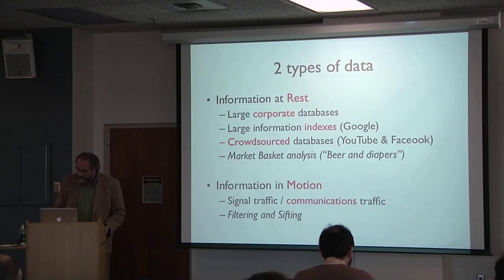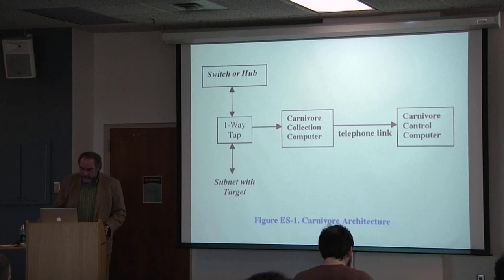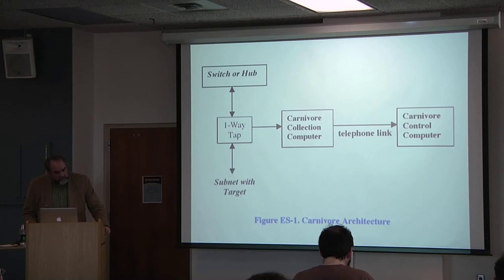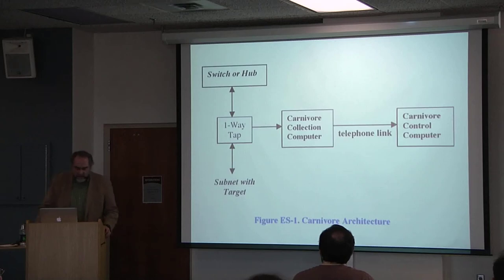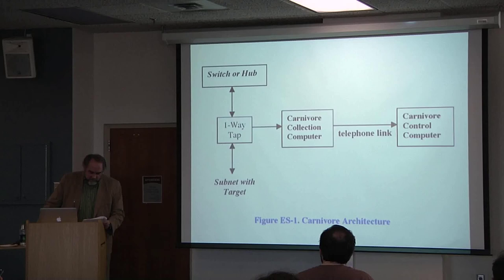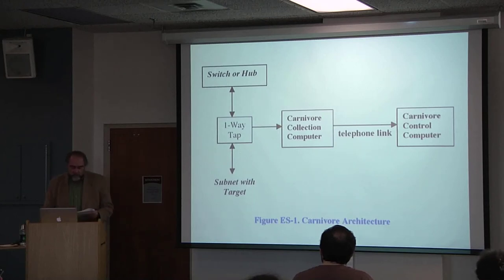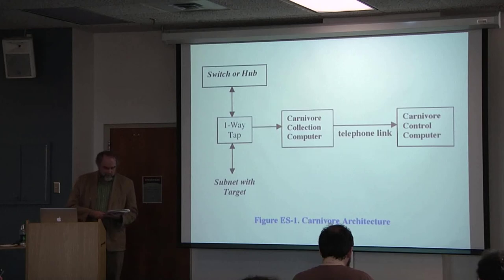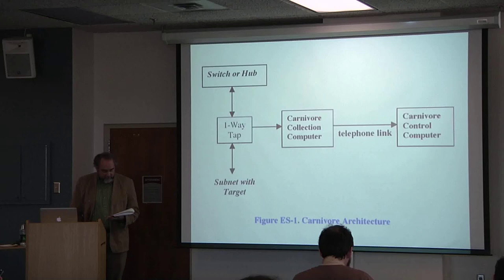Information in motion is the information that is in transit over communication channels, be they fiber optic cables, satellites, or your local Wi-Fi. This is the massive flow of phone conversations, emails, web page requests, and various internet transactions. The independent technical review of the Carnivore system, final report of 2000, prepared by the IITRI, has some nice graphics to show how this is done. Essentially, you tap into a network and listen in on the traffic, filtering and sifting for the information that meets various requirements.